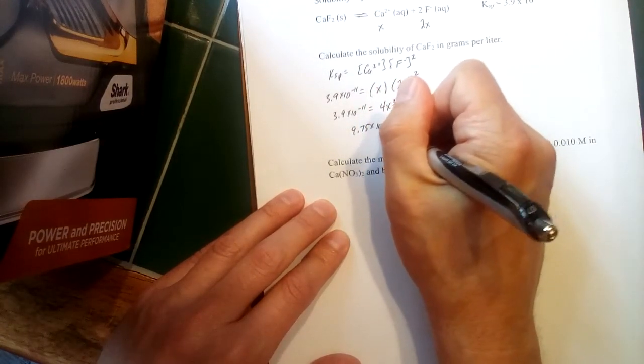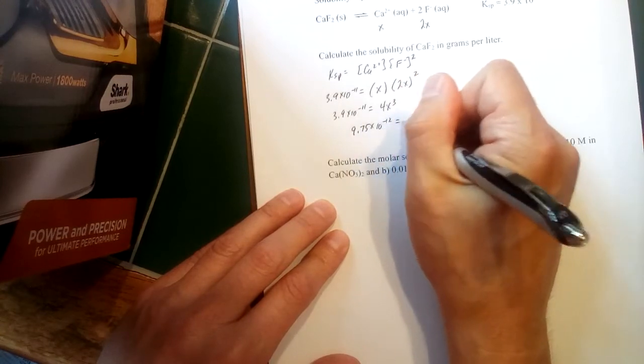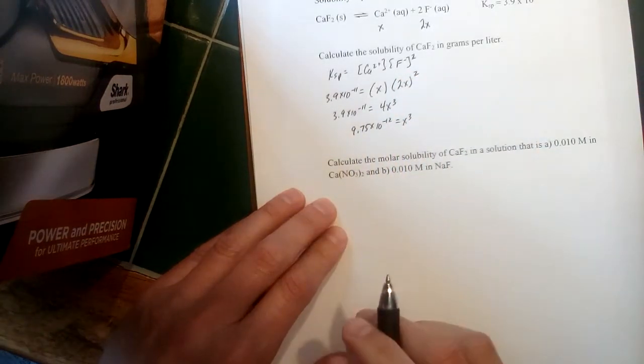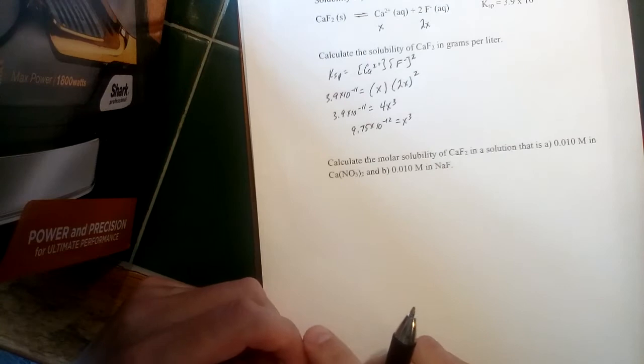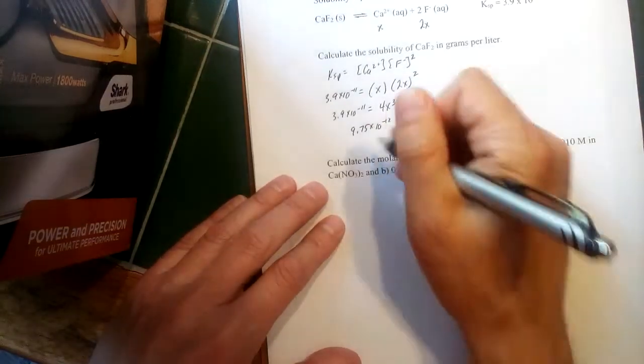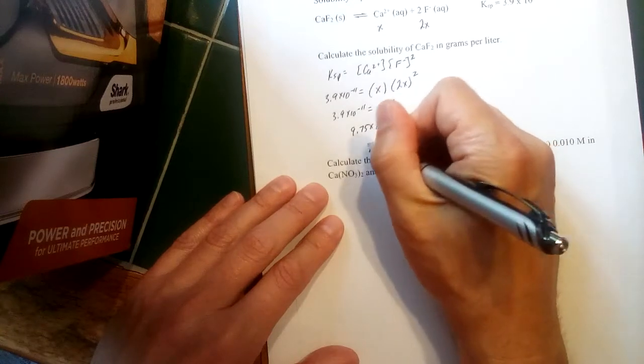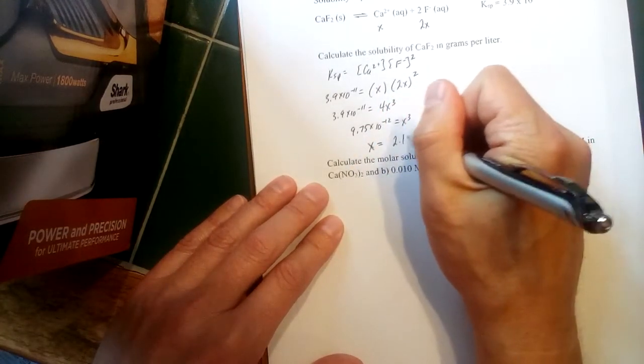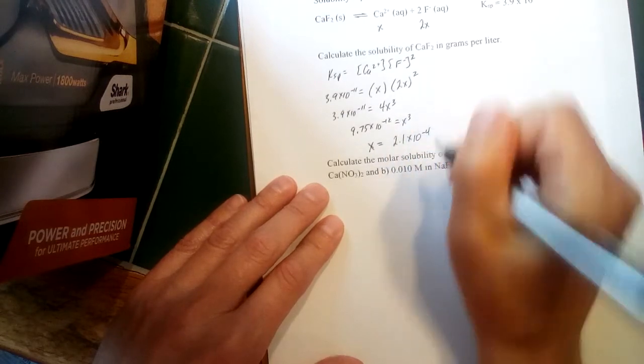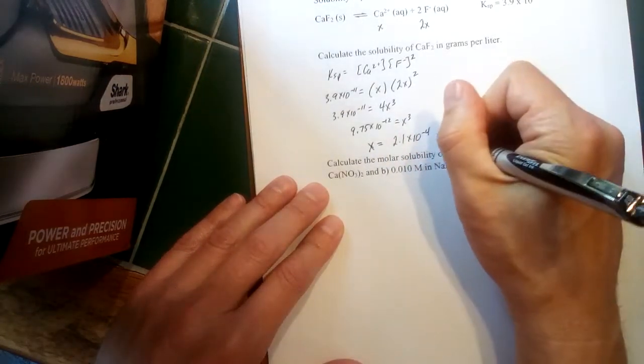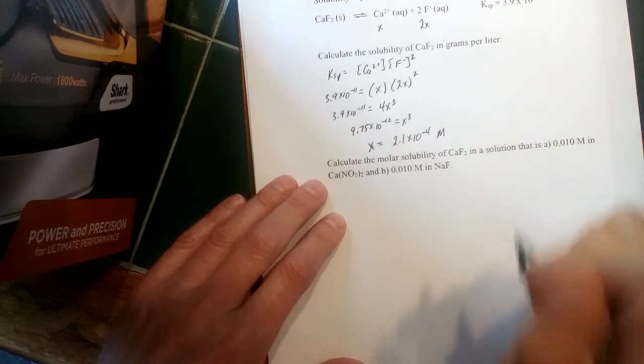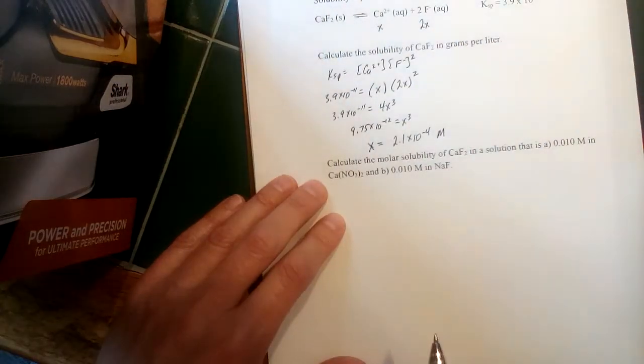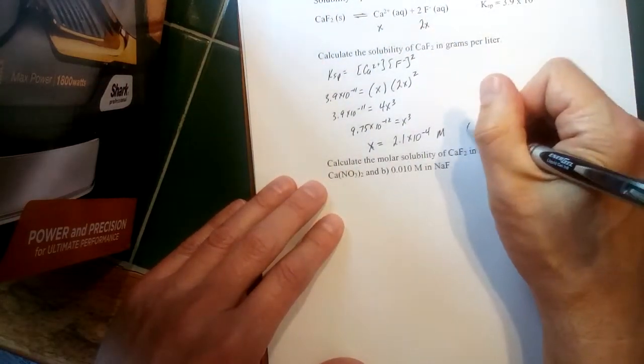Right, now you should be able to find a cube root on your calculator or at least be able to figure out how to do that. Take the cube root here and we find that x is equal to 2.1 times 10 to the minus fourth. That's a molarity—how many moles of our calcium fluoride dissolve per liter of water present. That is what we would describe as the solubility of the solid that we're looking at, calcium fluoride.